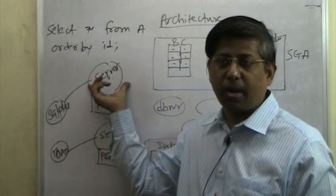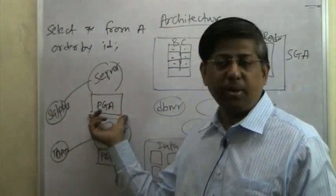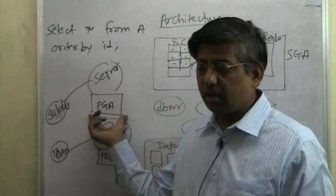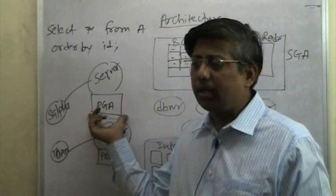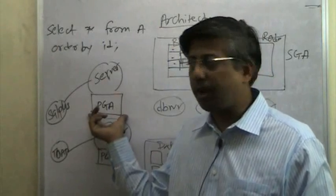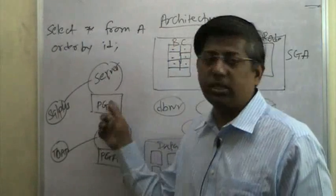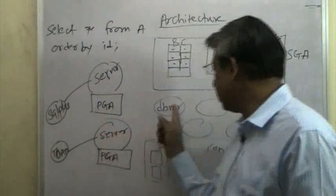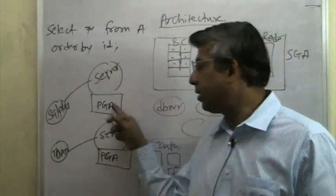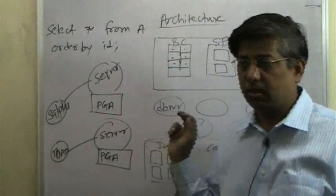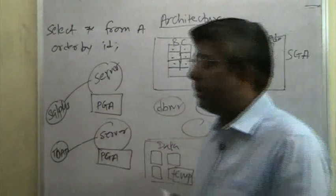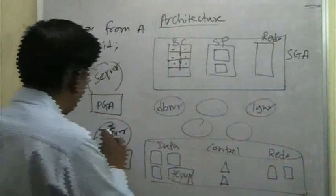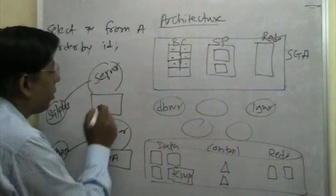So, dedicated server process is a program. And for that, there is certain memory requirement. And that is what we are calling it as a PGA, the program global area. Many people call it as a private global area also. Why private? Because it is associated only with this process. No other process running on the same machine can go and interfere with this program global area. And that is why it is sometimes called as private. And this is where the sorting happens.